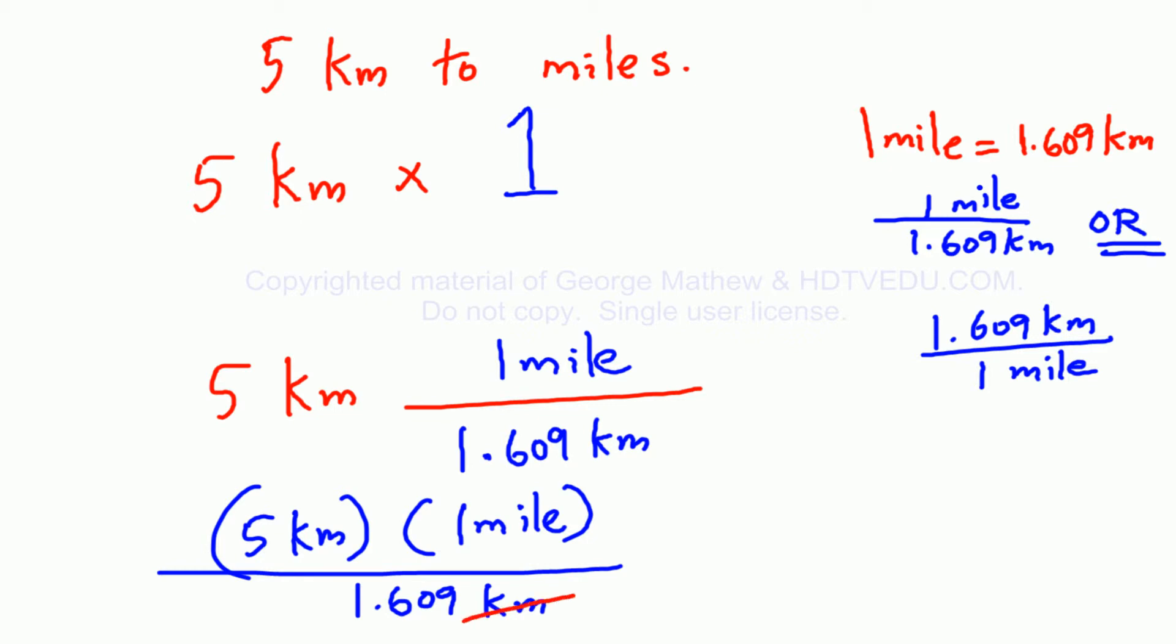Immediately, kilometers and kilometers cancel. What do we get? 5 times 1 is 5, divided by 1.609. What does not cancel? Miles.